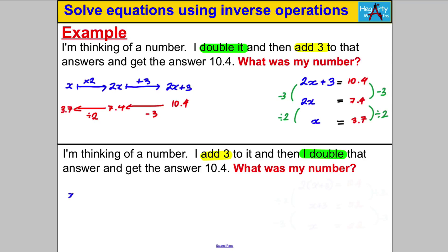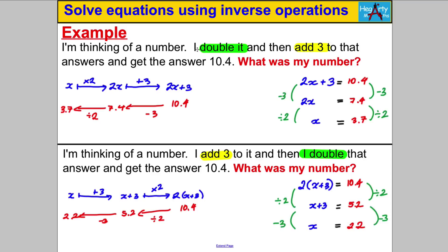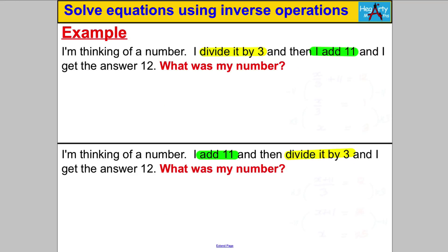The next one: I'm thinking of a number X — this time I add 3 first to get X + 3, then double the whole expression to get 2(X + 3), and again this equals 10.4. Now I undo in reverse order: the opposite of multiplying by 2 is dividing by 2, so 10.4 ÷ 2 = 5.2; then subtract 3 (opposite of adding 3) to get X = 2.2. Notice how different the order was compared to before, and we got different answers.